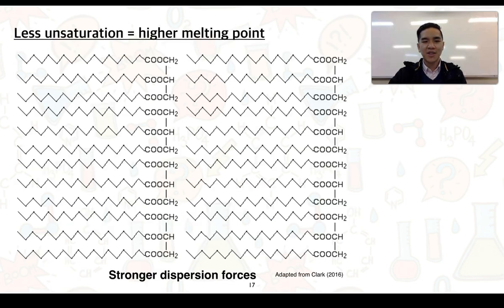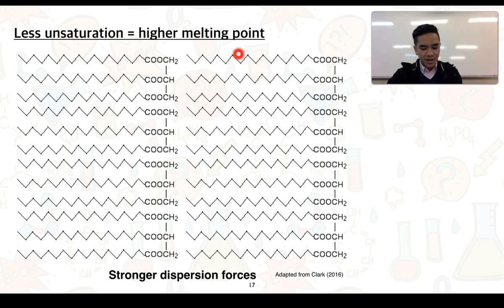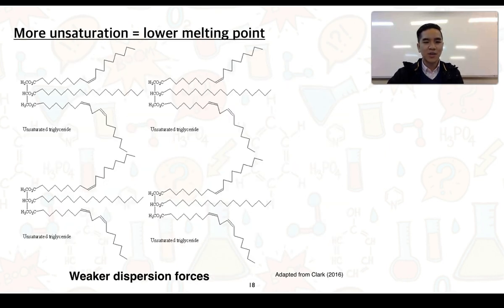In terms of the effect that the degree of unsaturation has on melting point, the less unsaturated a triglyceride is — or alternatively, the more saturated it is — the higher its melting point. We can see that saturated triglycerides can align very closely to one another, which allows for the formation of very strong dispersion forces. So it's not just the size or mass of a molecule, but also its ability to line up or associate closely with others. On the other hand, an unsaturated triglyceride has carbon-to-carbon double bonds that introduce kinks within the chain.